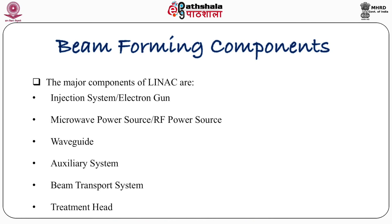The major components of the linac are: injection system, electron gun, microwave power source (RF power source), waveguide, auxiliary system, beam transport system, and treatment head. These are the active parts of the linear accelerator where electrons come out from the electron gun, are injected into the waveguide with microwave power, their energy is increased, and they finally fall on the target to produce photons.